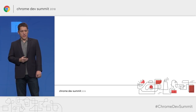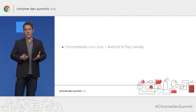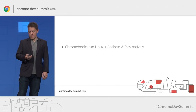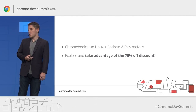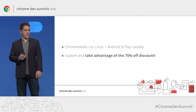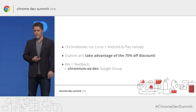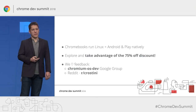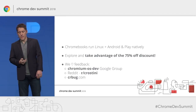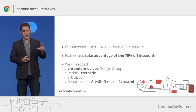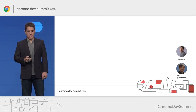In closing: Chromebooks are convergent machines that run Linux, Android, and Google Play natively without emulation, so they run very fast. Take advantage of the 75% off discount. Explore Chromebooks and give feedback — the team loves it. There's the Chromium OS dev Google group and the Crostini subreddit. If you find issues, check if they've been reported at crbug.com, otherwise file them using Shift+Alt+I and add the Crostini tag. Thank you from Dan and Steve.